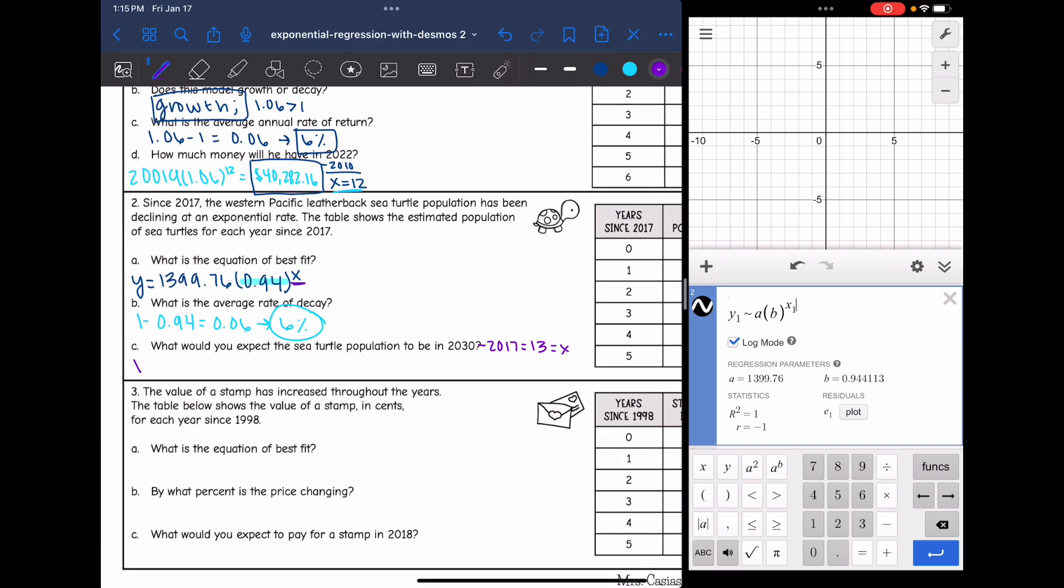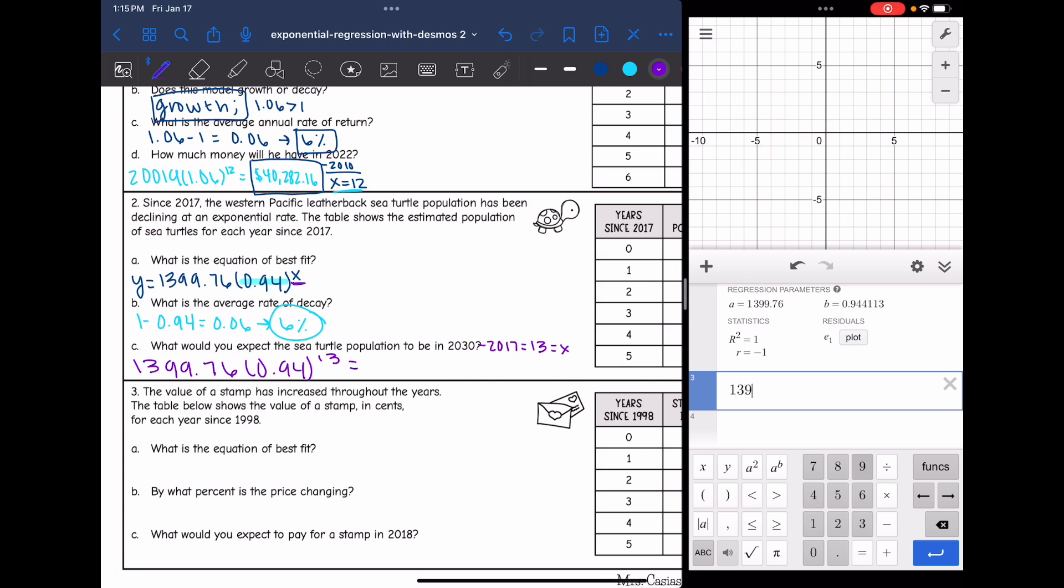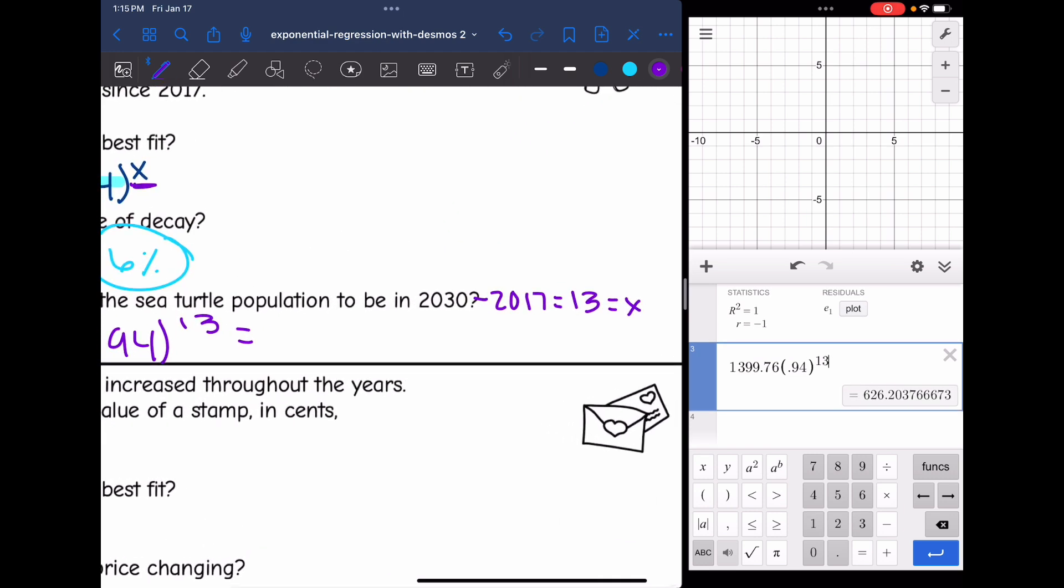So I'll do 1399.76 times 0.94 to the 13th. And that will tell me the sea turtle population in 2030. Which is about 626 turtles. All right.